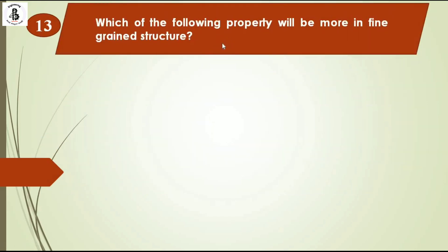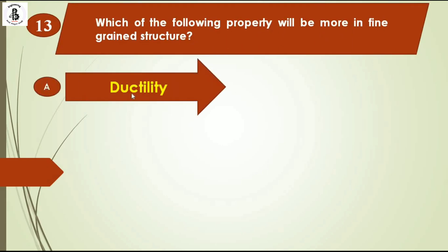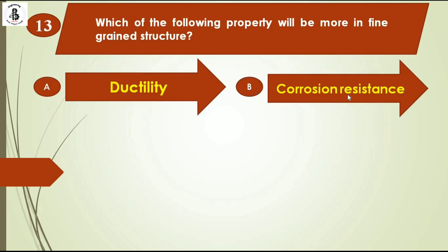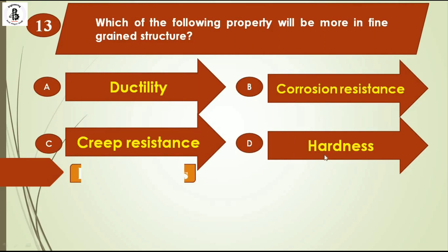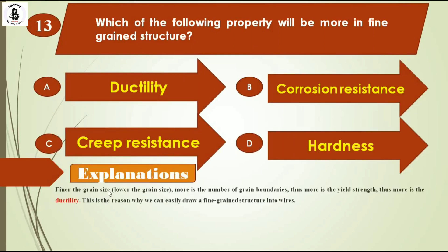Which of the following properties will be more in a fine grain structure? Option A ductility, option B corrosion resistance, option C creep resistance, option D hardness. Finer the grain size, the lower the grain size and the more the number of grain boundaries, resulting in more yield strength and thus more ductility. This is the reason why we can easily draw a fine grain structure into wire form. So the right answer is option A, ductility.